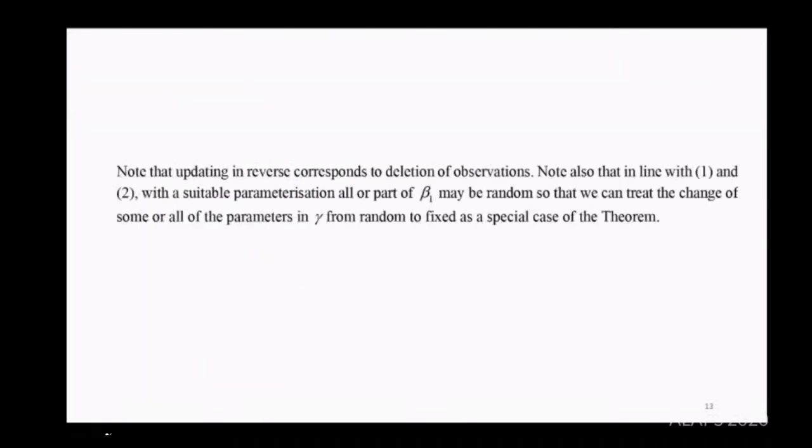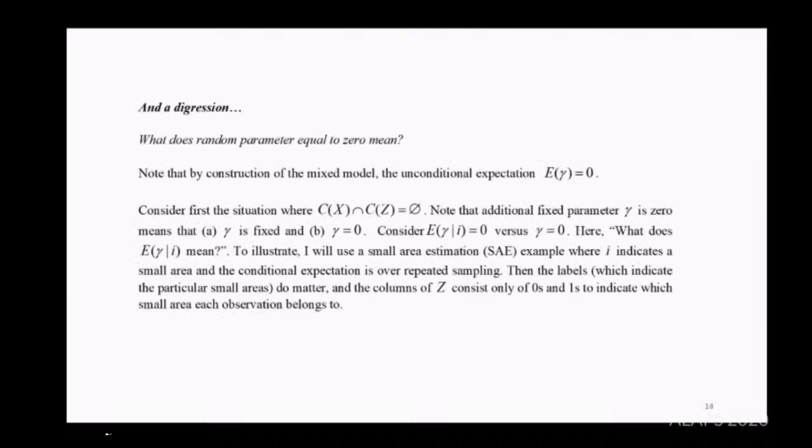You can treat this as updating, adding data, or in reverse, deletion of observations. Part or all of beta one may be random, covered in the 1996 paper. We can treat random to fixed as a special case of the theorem. But I've got to digress. What does a random parameter equal to zero mean? By construction, the unconditional expectation of random parameters is zero. Looking at the situation where column spaces intersect, we've got two possibilities: gamma is fixed and gamma equals zero. But we need to consider the expected value of gamma given the labels.